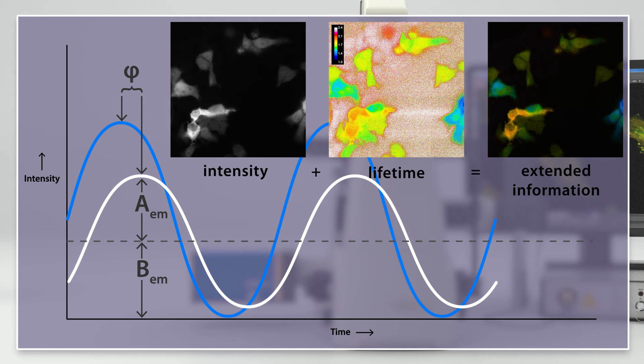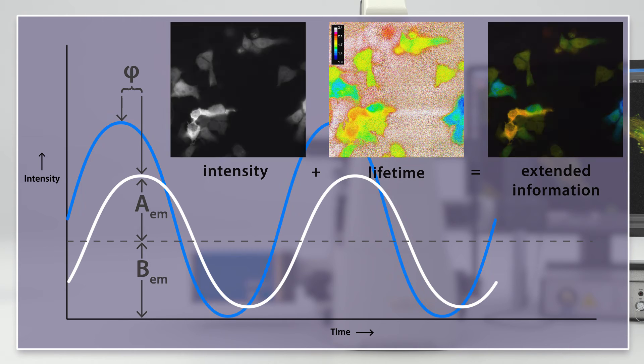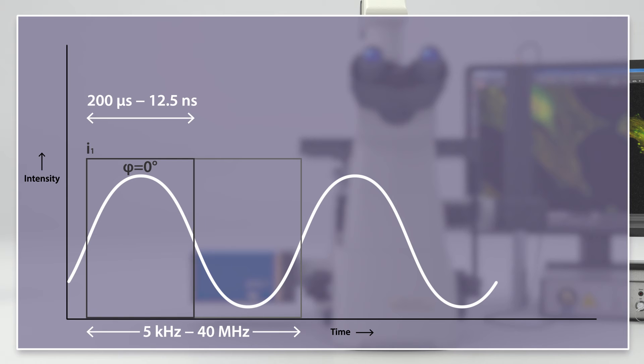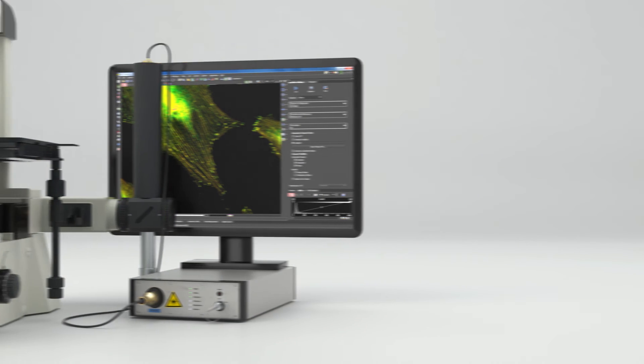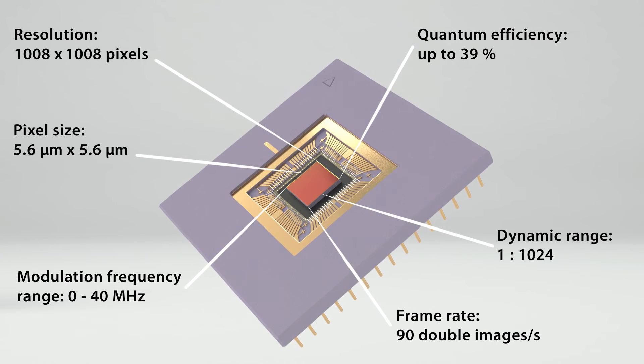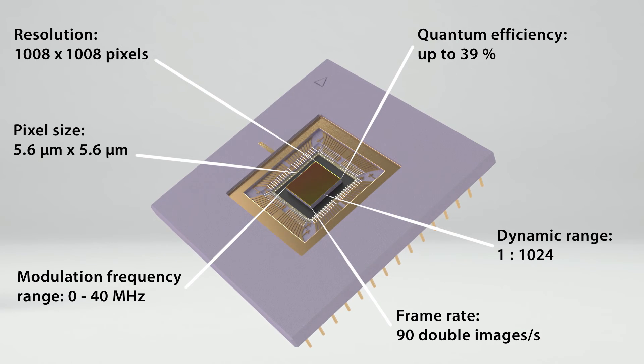These lifetime images extend the information obtained by common intensity images. The reconstruction of the emission signal by means of half-wave integration requires a fast modulatable image sensor. This is where the modulatable high-frequency sensor QM FLIM2 comes into play.